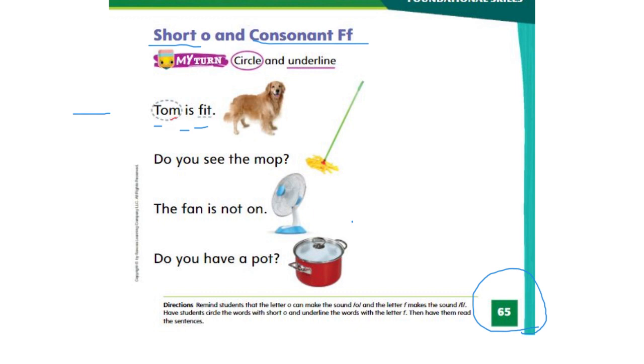We see that Tom is a word with short O. So we circle the word Tom because it has the short O sound. And we underline the word fit because it begins with F. Can you do the same with the rest of the sentences? I'm sure you can.